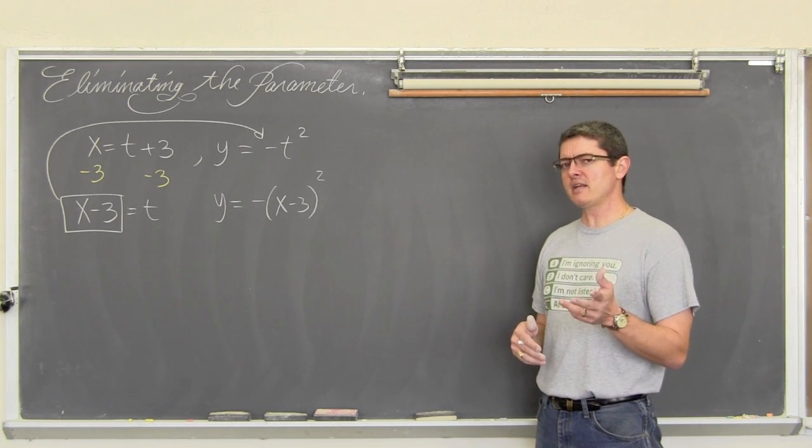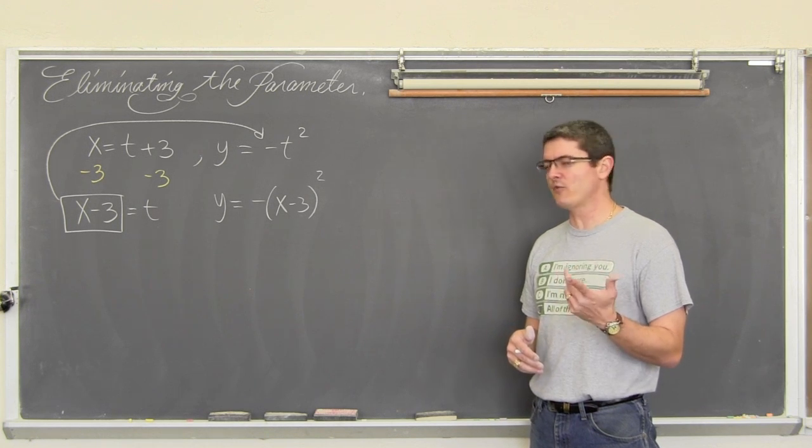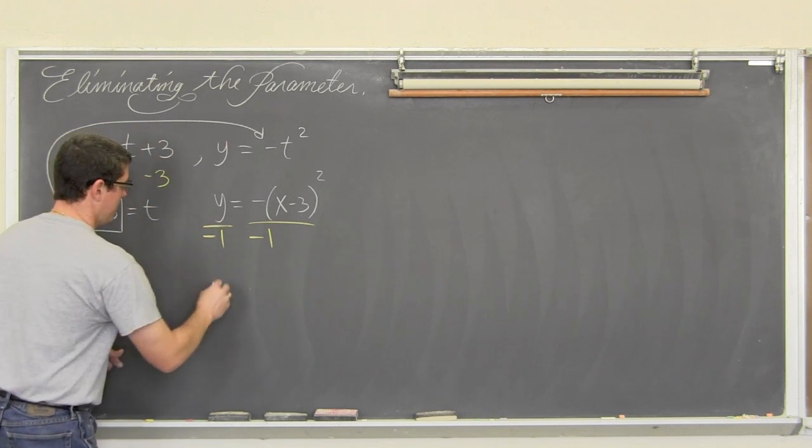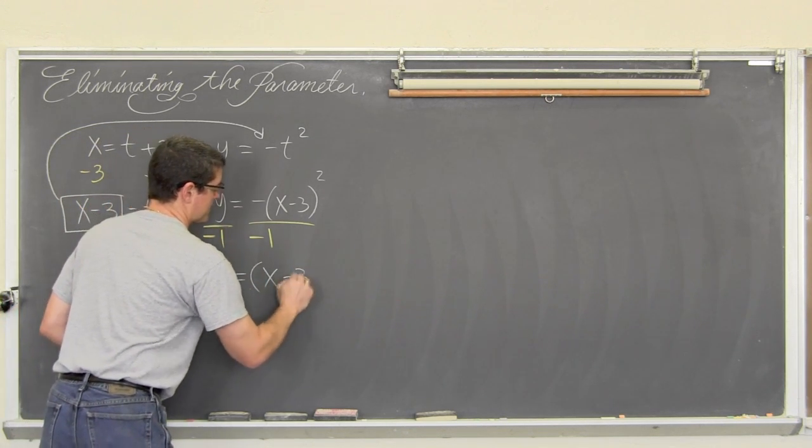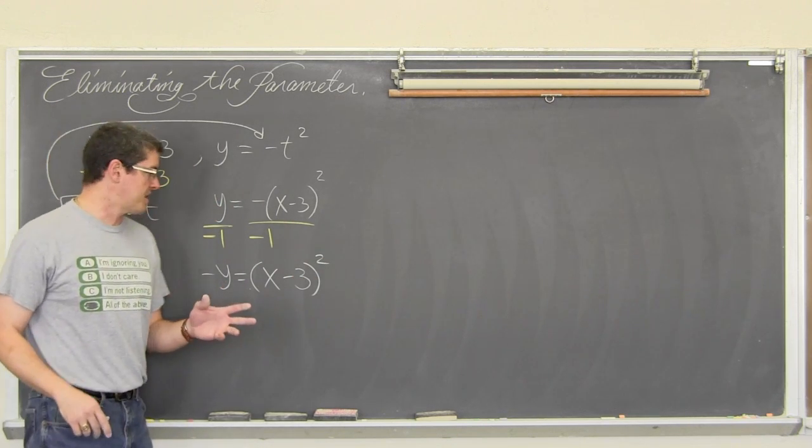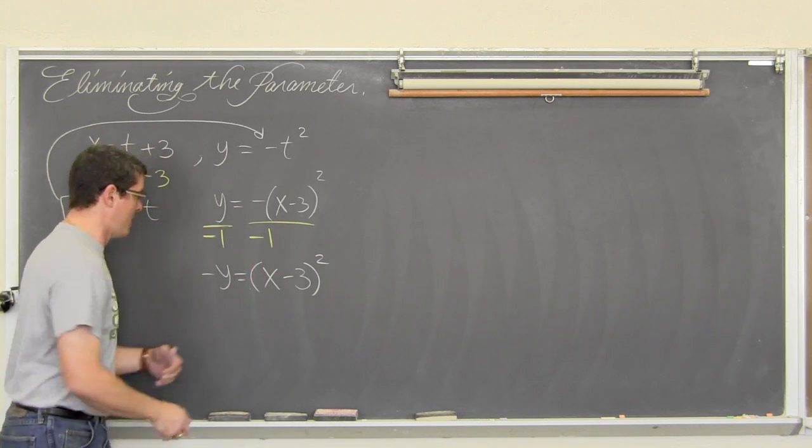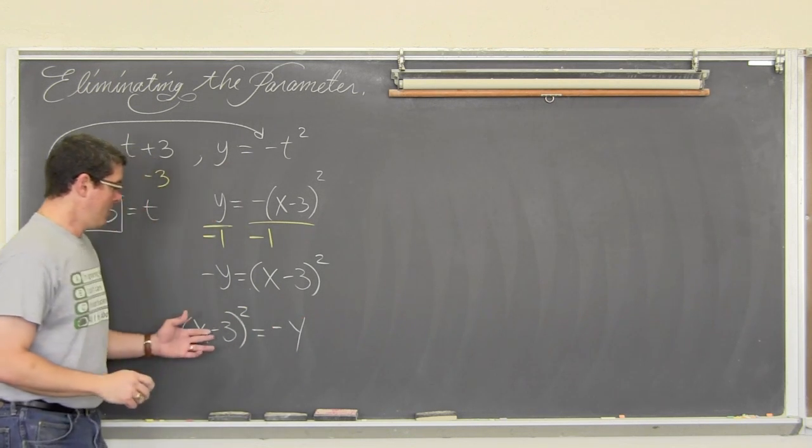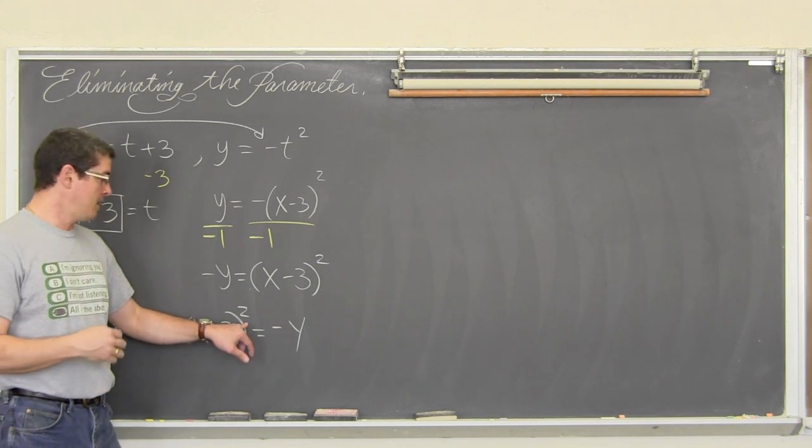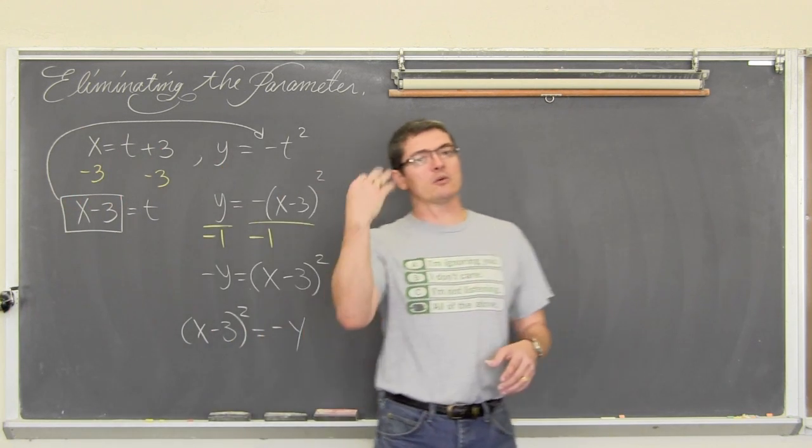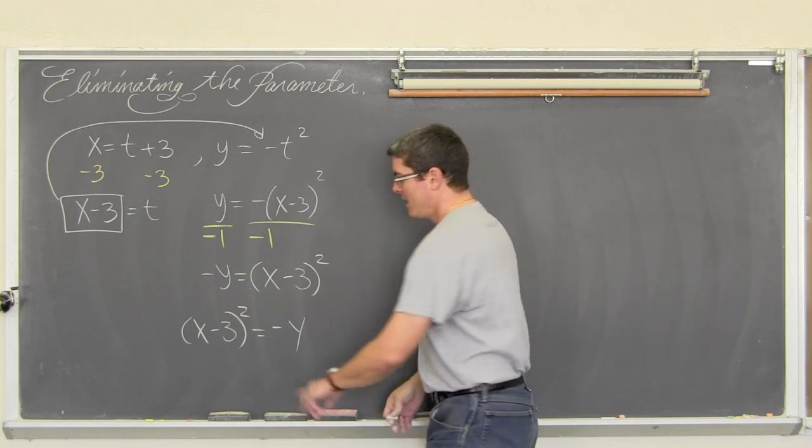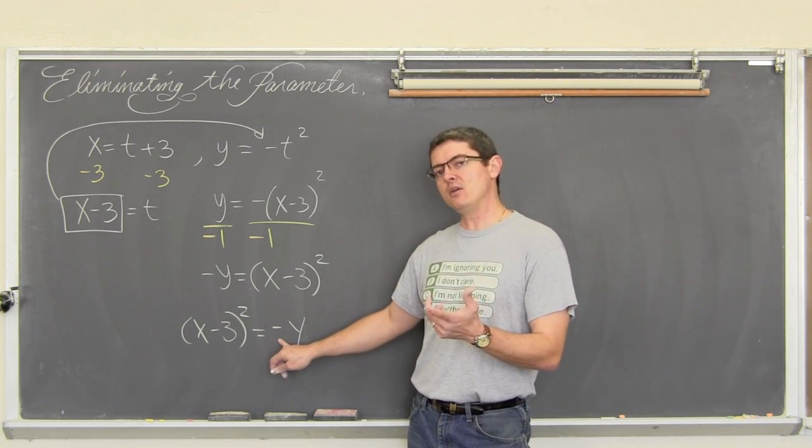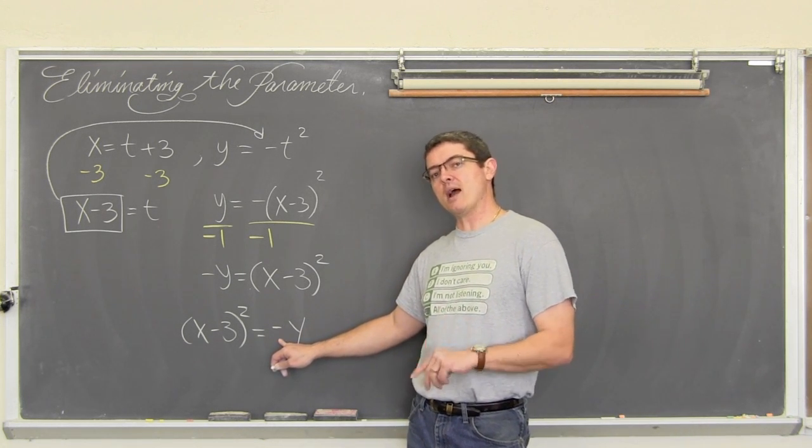But we did just study parabolas in standard form. So I can take this equation, divide both sides by negative 1 and get negative y is equal to x minus 3 squared. And if I really wanted to push the idea of getting this into standard form, I can turn this around and get x minus 3 squared equals negative y. Well this is a parabola with the x being squared, which means the parabola opens either up or down. And my coefficient of my single degree term is negative. So my 4p value is equal to negative 1. So this is a parabola opening down.